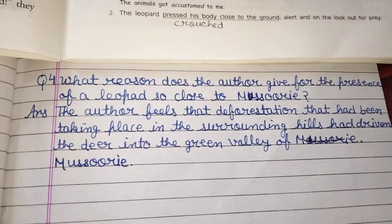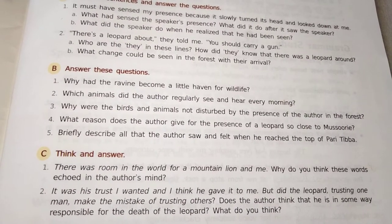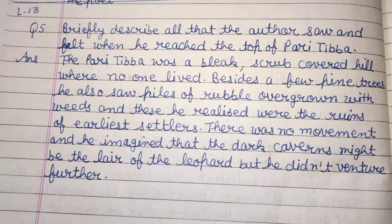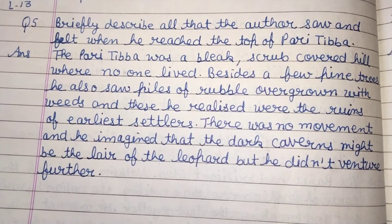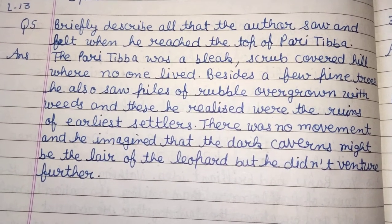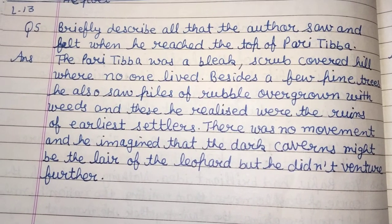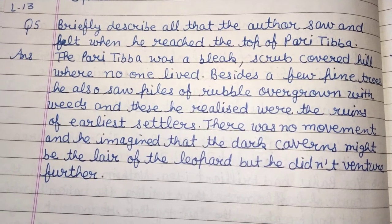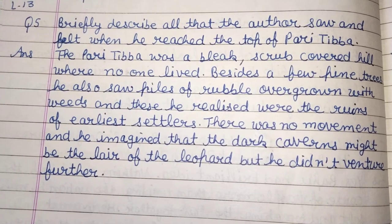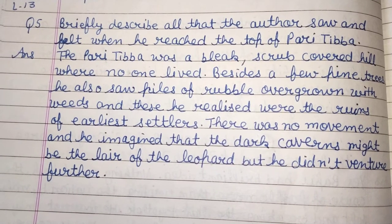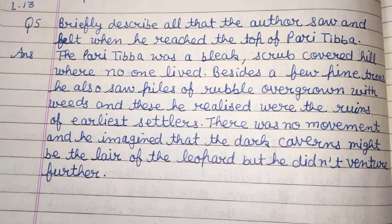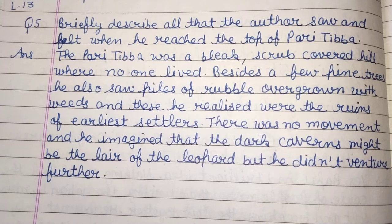Fifth question: Briefly describe all that the author saw and felt when he reached the top of the Paritiba. Answer: The Paritiba was a bleak, scrub-covered hill where no one lived. Beside a few pine trees, he saw piles of rubble overgrown with weeds, which were the ruins of earlier settlers. There was no movement, and he thought the dark caverns — C-A-V-E-R-N-S — might be the lair of the leopard, but he did not venture — V-E-N-T-U-R-E — further.